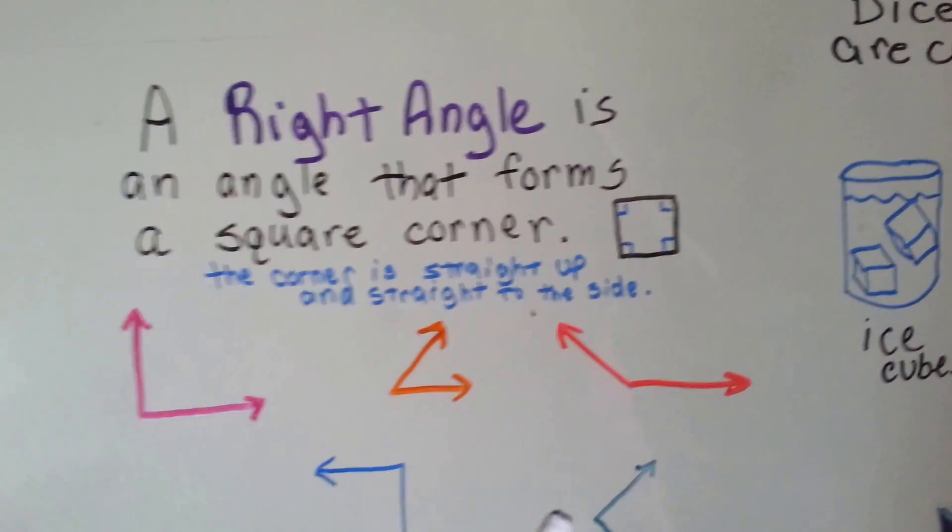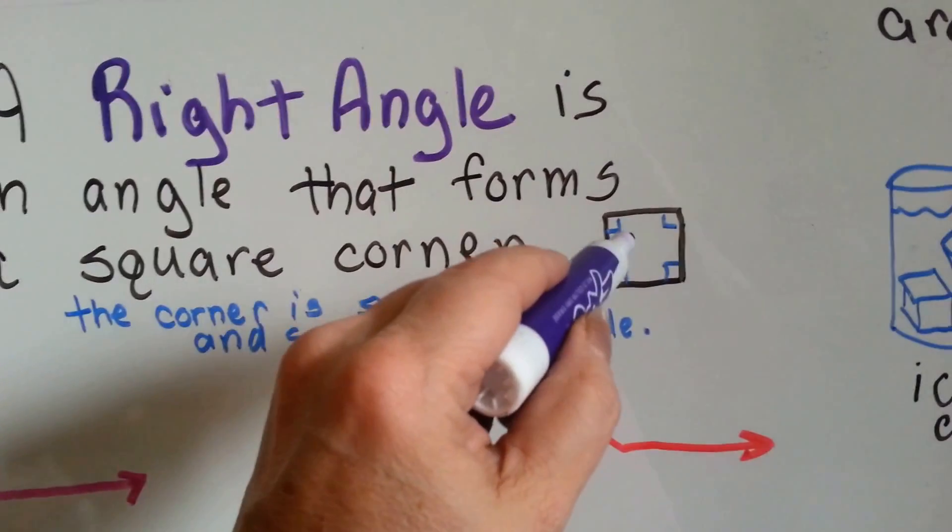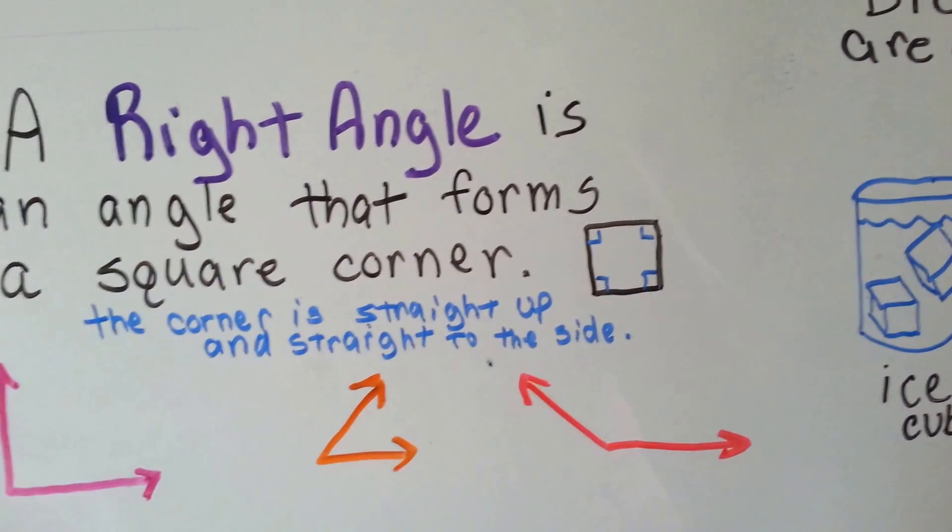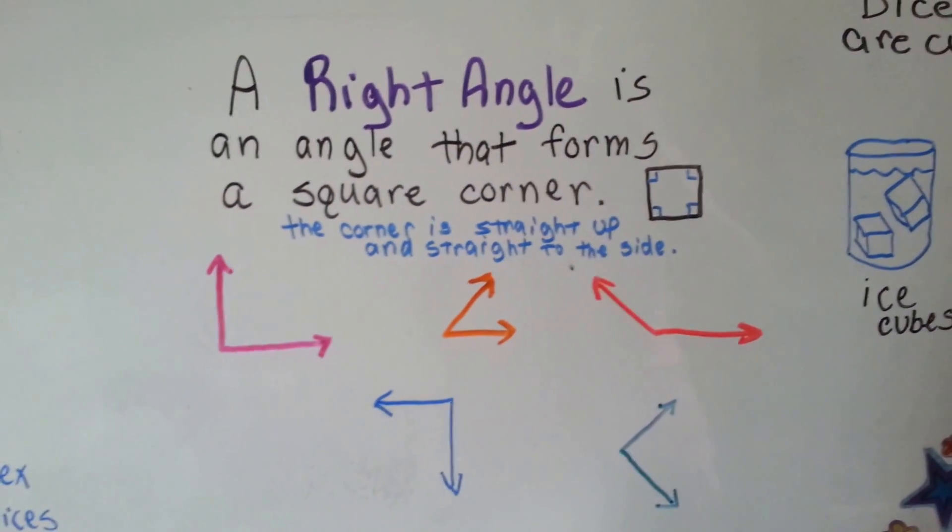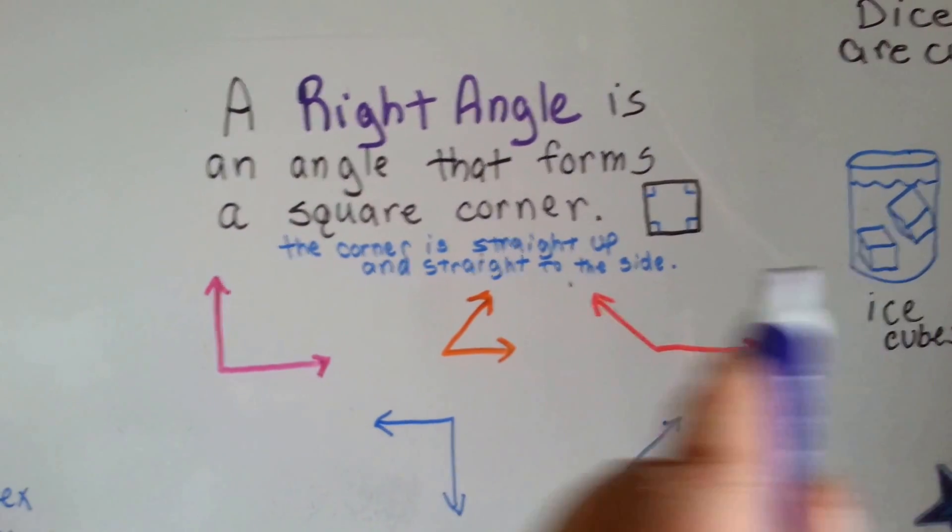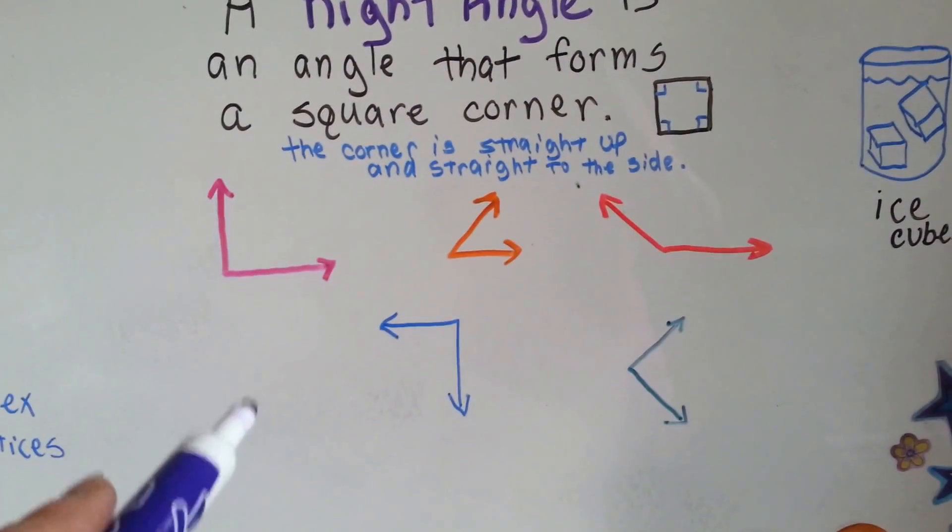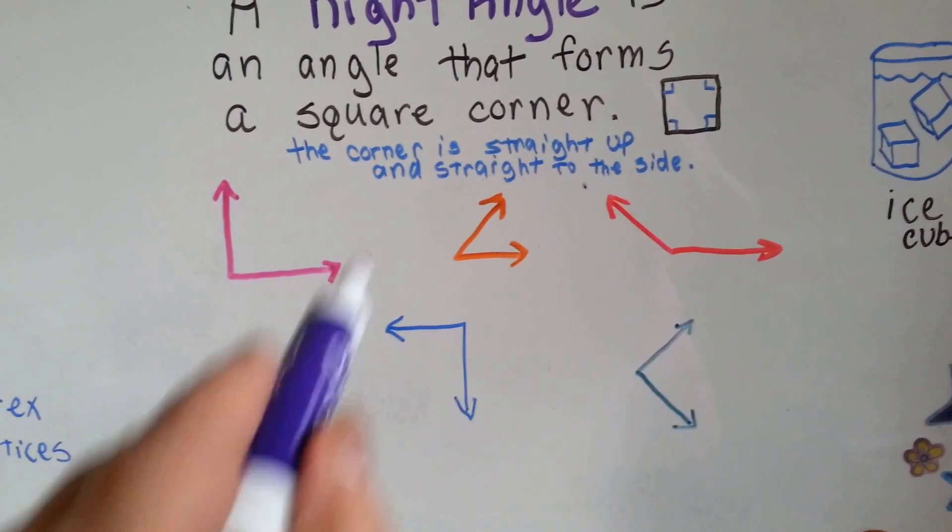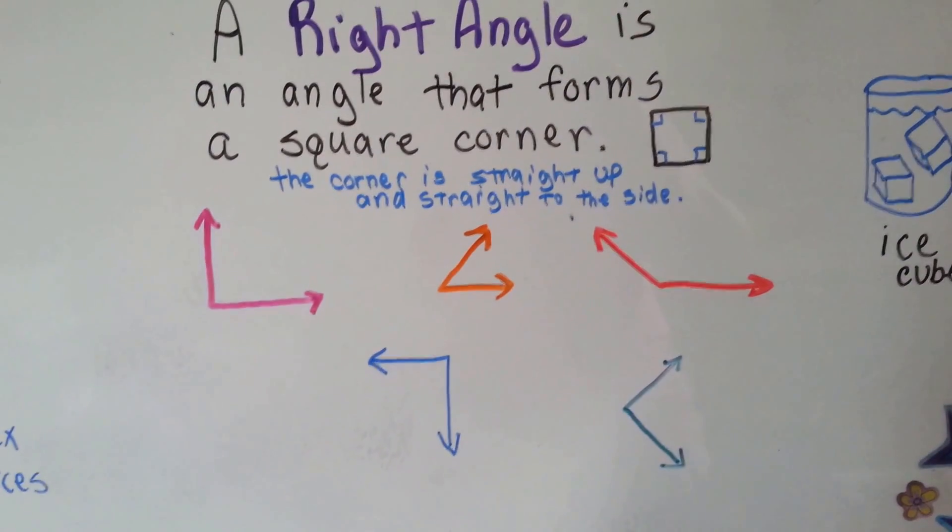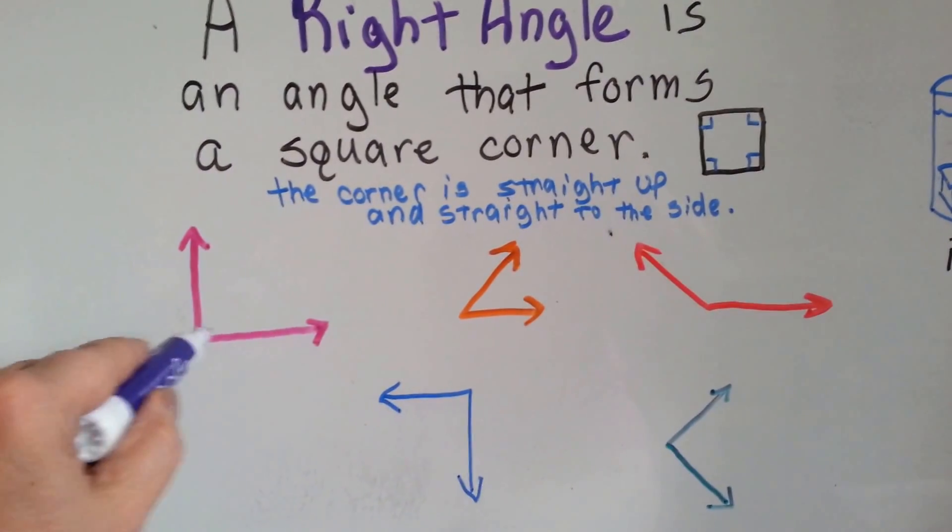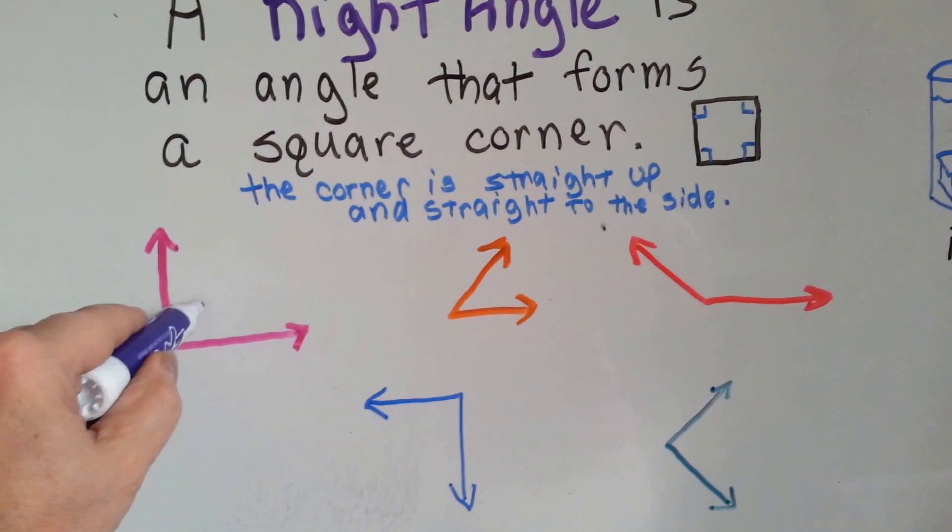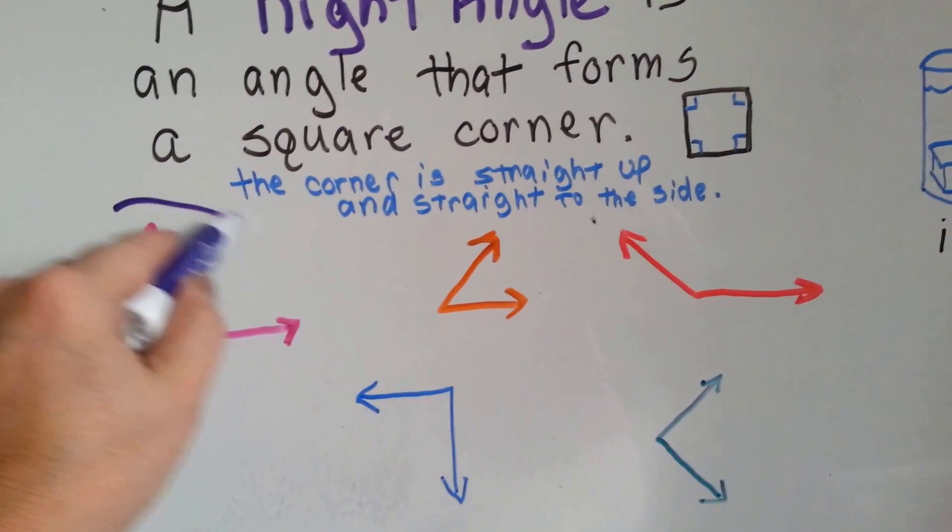See that? In fact, in geometry, they even put this little shape like this into the corner to show you that it's a right angle. The corner is straight up and straight to the side. So if you were to look at these angles, can you see the right angles? This one goes straight up and straight to the side, and yes, it is a right angle.